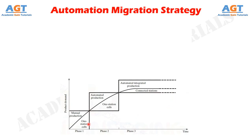If the product turns out to be successful and high future demand is anticipated, then it makes sense for the company to automate production. The improvements are often carried out in phases.